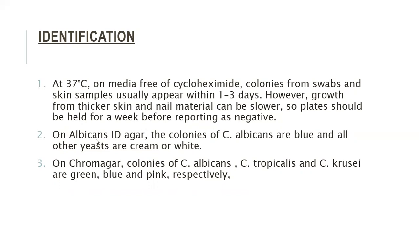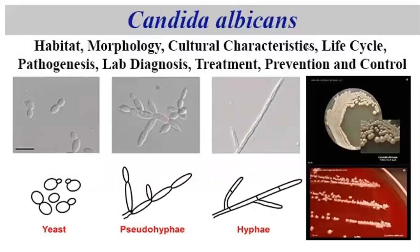On Albicans ID agar, colonies of Candida albicans are blue and all other yeasts are cream or white. On chromogenic agar, colonies of Candida albicans, Candida tropicalis, and Candida krusei are green, blue, and pink respectively. So these are the cultural characteristics of Candida albicans.